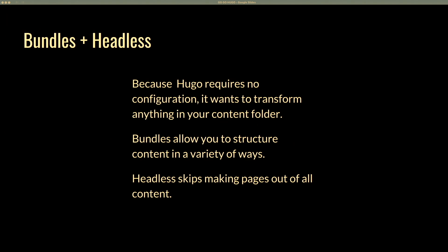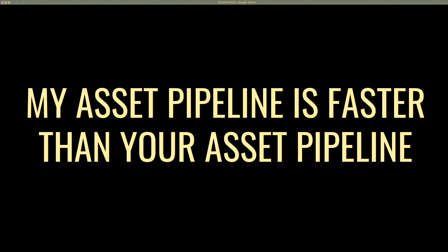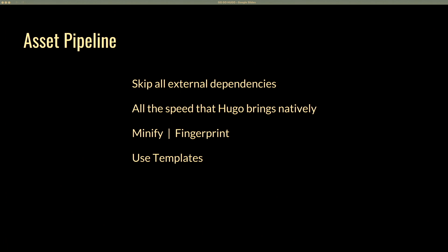Hugo has a bundles feature. Because Hugo wants to take your content from a content folder and output it to a public folder, bundles allow you to take control over that content — if you have assets or content you may not want to output, you can control it with Hugo. And there's an asset pipeline: you can build CSS and JavaScript right in Hugo, and it's very fast — faster than anything you'll get in Node — with no external dependencies. It also minifies and fingerprints your assets, and your asset files can read from templates.